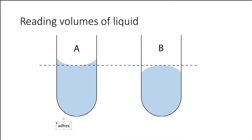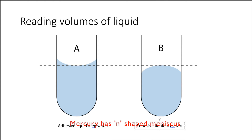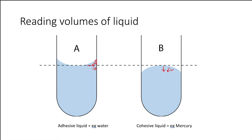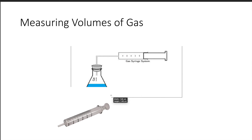When reading the volume of a liquid, look at the meniscus. For adhesive liquids like water, the liquid tends to stick to the walls of the container, giving a U-shaped meniscus. For cohesive liquids like mercury, which tends to stick toward itself, you get an N-shaped meniscus — so you read the volume at the top of the meniscus.